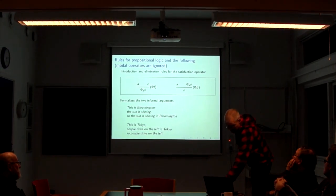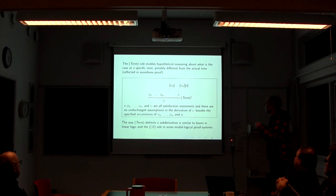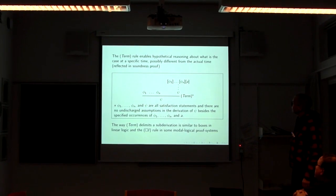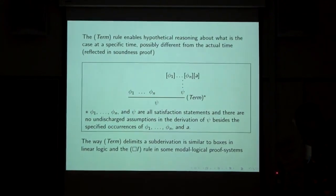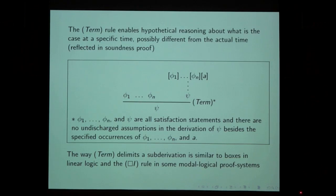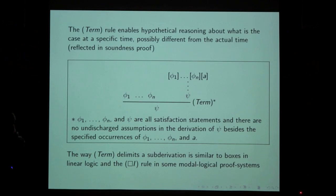But it turns out that this is not enough. We need two additional rules. The second one is more complicated and needs explanation. What this rule does is allow you to take a journey, so to speak, to a hypothetical time and then go back again to where you came from. The term rule, as it is now named, enables you to perform some hypothetical reasoning — to reason about a place where you might be and then go back again. From a proof-theoretic point of view, you are encapsulating a piece of argument.